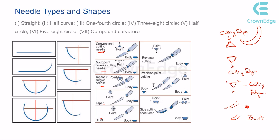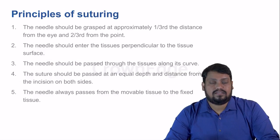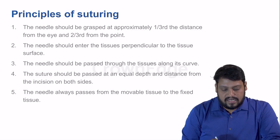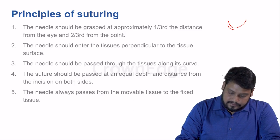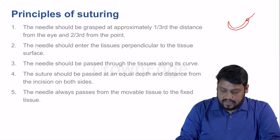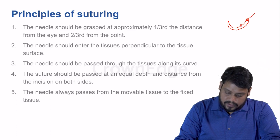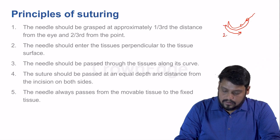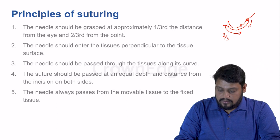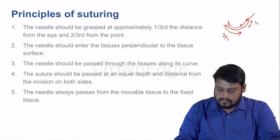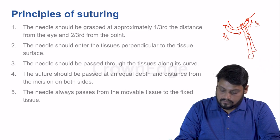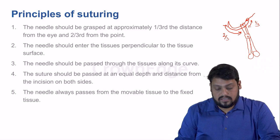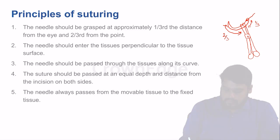The principles of suturing are very important. First, the needle should be grasped at approximately one-third the distance from the eye and two-thirds from the point — so the needle holder grips the needle at one-third from the eye. Second, the needle should enter the tissues perpendicular to the tissue surface, not diagonally. Third, the needle should be passed through the tissues along its curve — you must rotate the needle, not pull it straight.